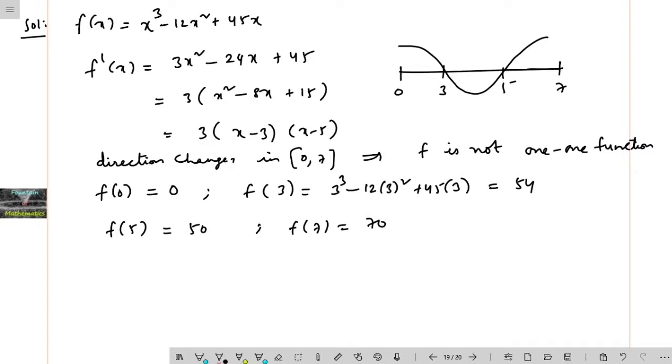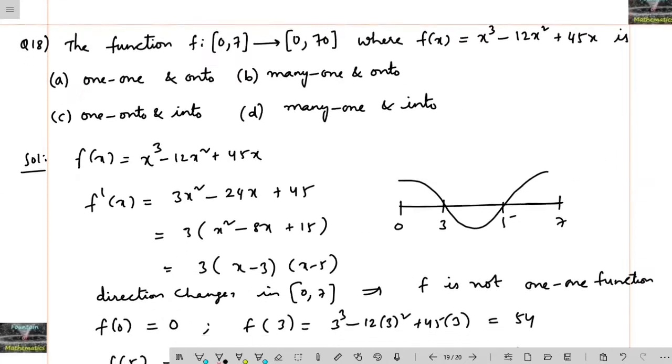All these values—f(0), f(3), f(5), f(7)—all these belong to [0,70].